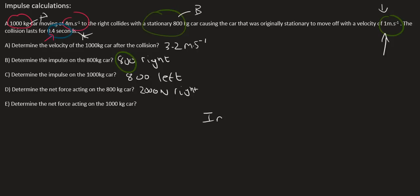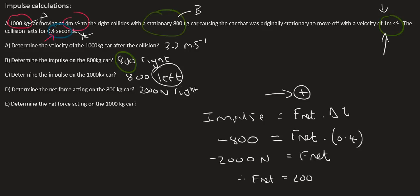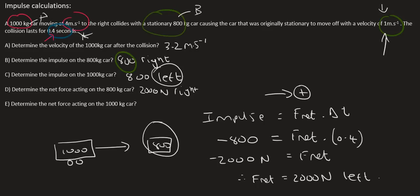The net force acting on the 1000 kg car: impulse equals F_net times time, choosing right as positive. The impulse on the 1000 kg car was 800 to the left, so we use minus 800. The time is also 0.4 seconds. We end up with minus 2000, so F_net equals 2000 Newtons to the left. That makes sense — the 800 kg car causes the 1000 kg car to slow down, so there is a force acting to the left. It doesn't mean the car moves left, but it causes the car to slow down.